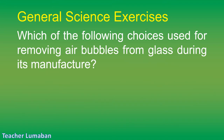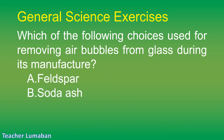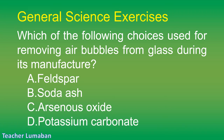Which of the following is used for removing air bubbles from glass during its manufacture? Letter A: feldspar. Letter B: soda ash. Letter C: arsenous oxide. Letter D: potassium carbonate.